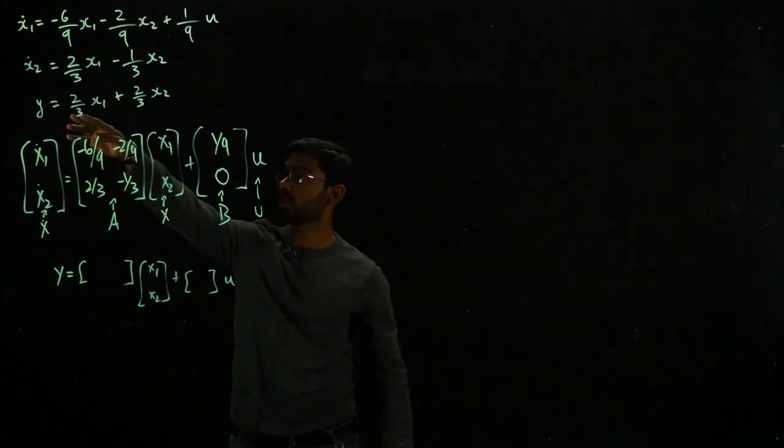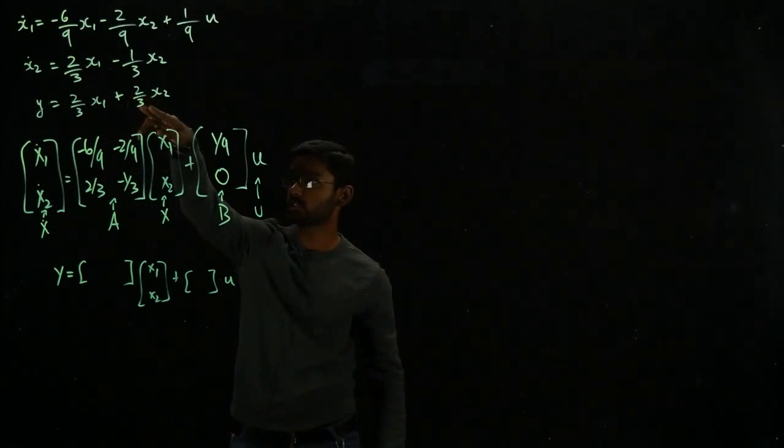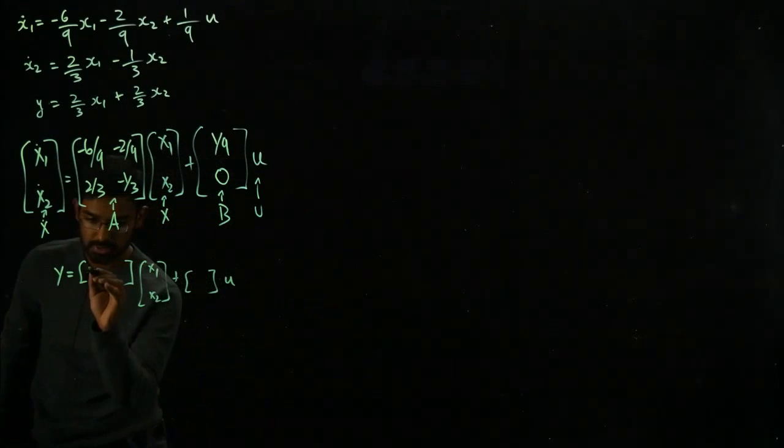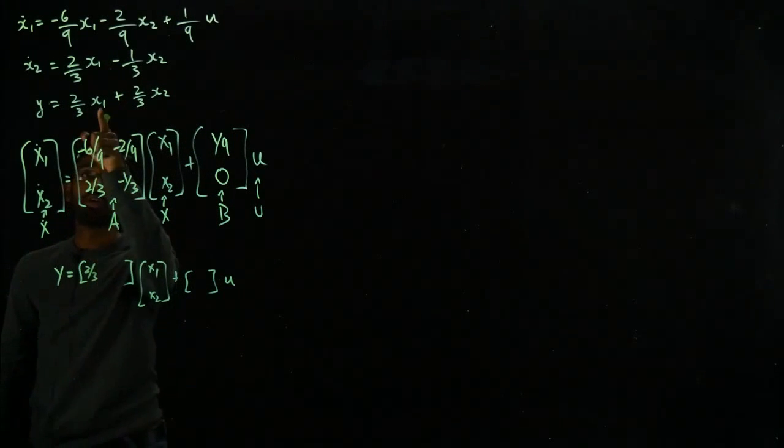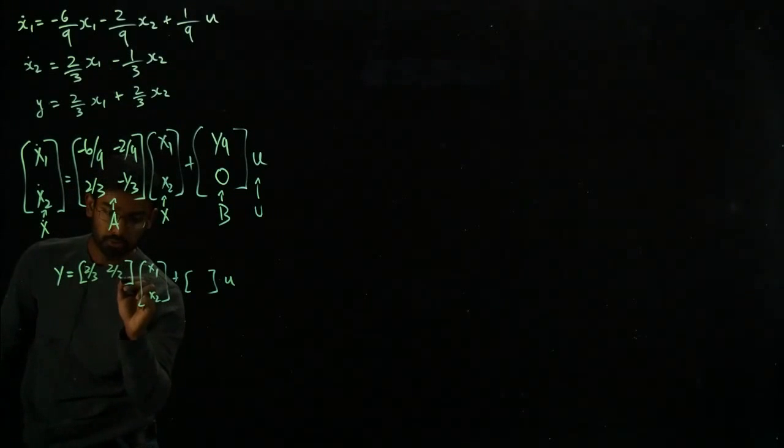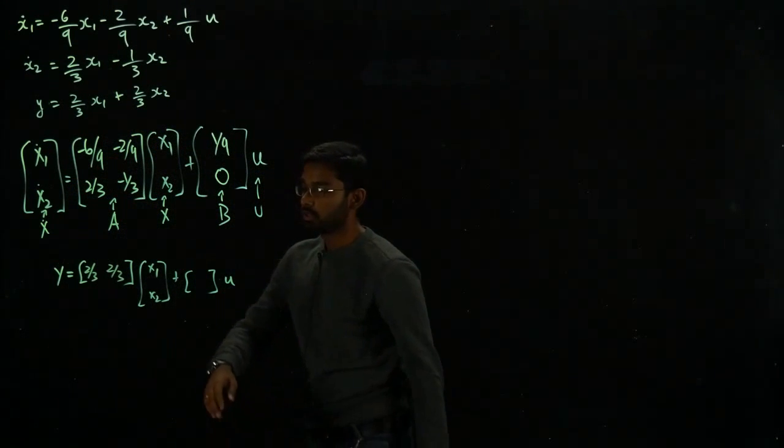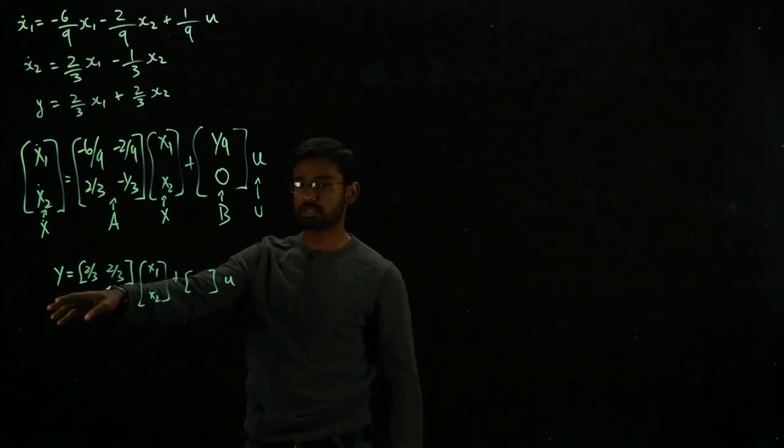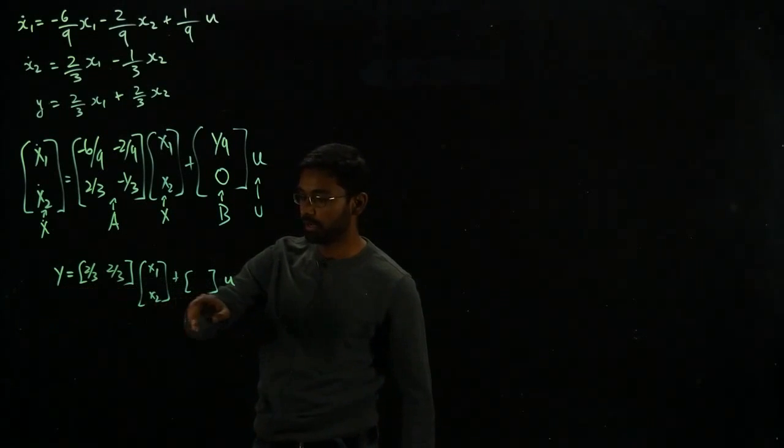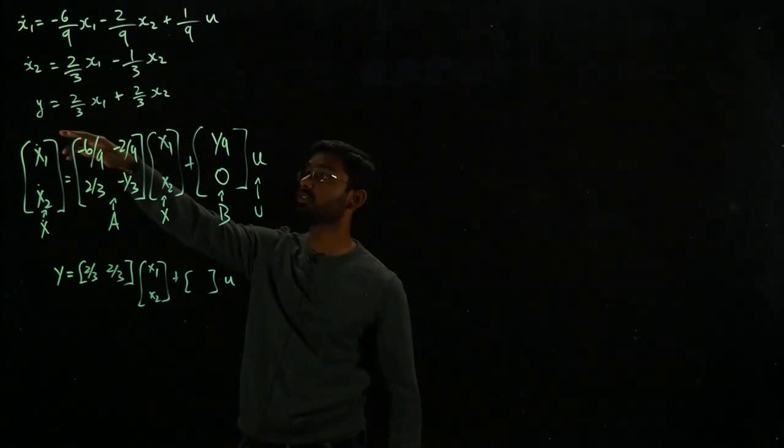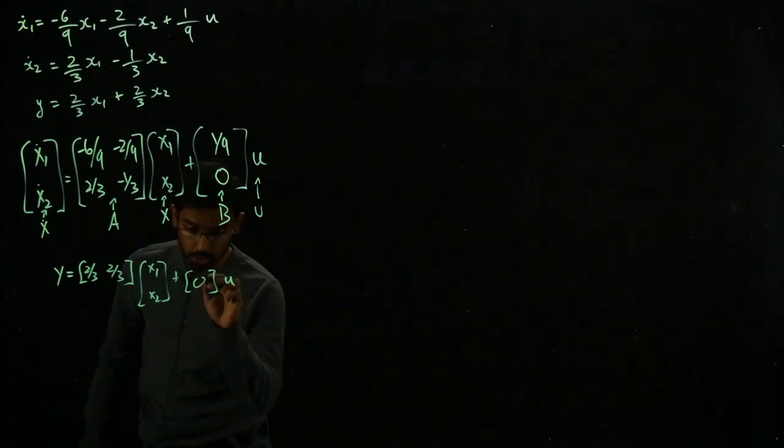Let's go back to this equation. I have 2 over 3 x₁ plus 2 over 3 x₂. So I'm going to simply plug in 2 over 3 x₁, 2 over 3 x₂. This already constitutes my output. I don't really need input so input is not directly affecting my output, so again zero here.